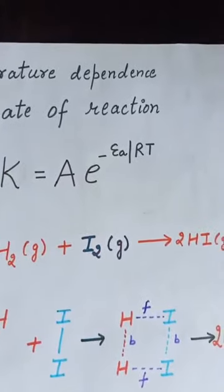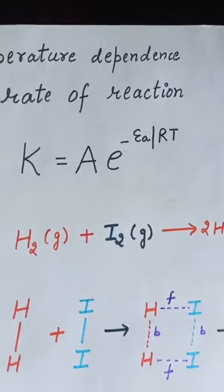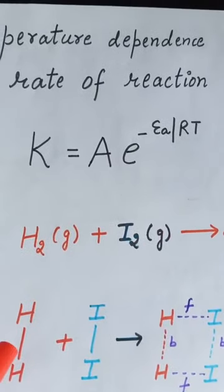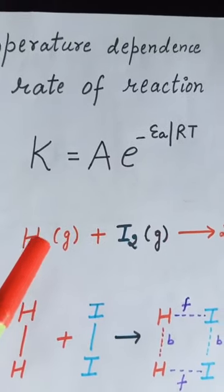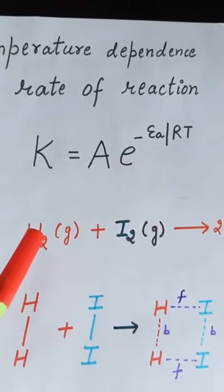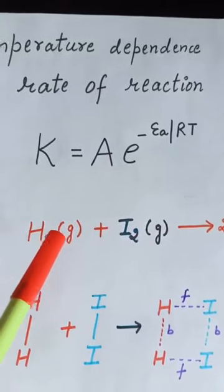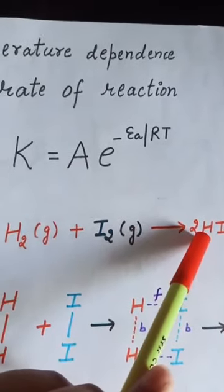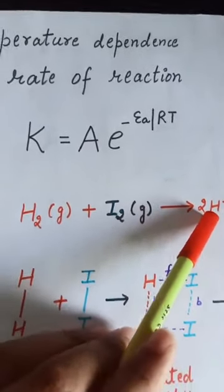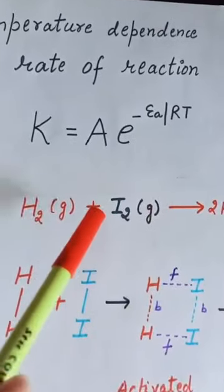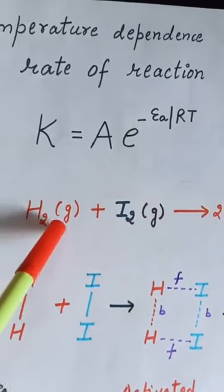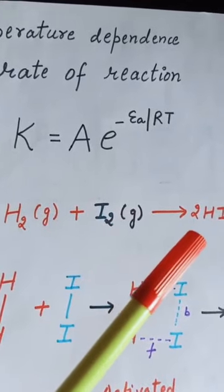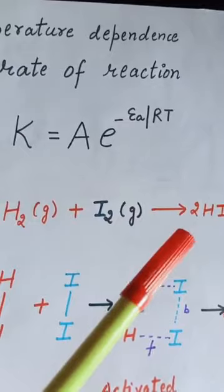Now let us understand the concept of activation energy by taking the example of the simple reaction H₂ + I₂ → HI. In this equation, H₂ and I₂ are the reactant molecules and HI is the product.